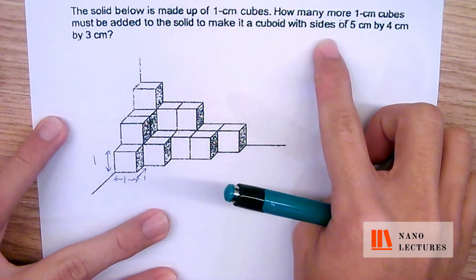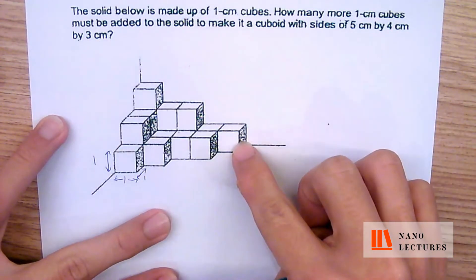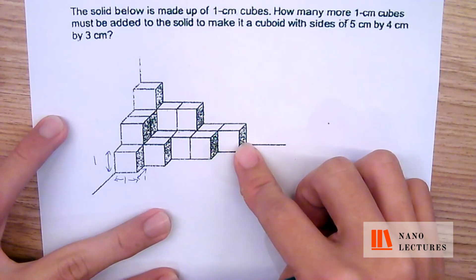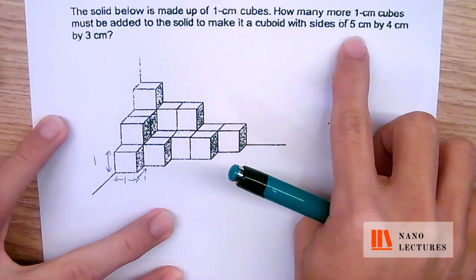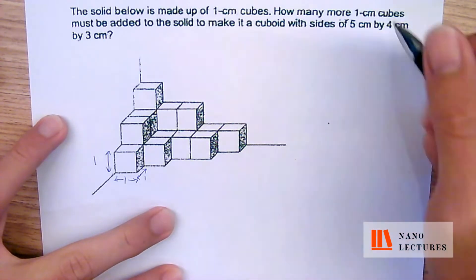In order to make a cube with a side of 5cm by 4cm by 3cm. If you watched the previous video, this is quite a similar question. Let's try to draw this cube of 5cm by 4cm by 3cm. This one will be the length, this one will be the breadth, and this one is the height.